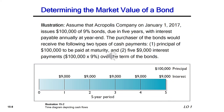Let's look at an illustration to understand how we figure out market value. Assume Acropolis Company on January 1st, 2017 issues $100,000 of 9% bonds due in five years, with interest payable annually at the end of each year. The purchaser receives two types of cash payments: the principal of $100,000 paid at maturity at the end of year five, and five $9,000 interest payments — calculated as $100,000 × 9% — paid once per year over the bond term.